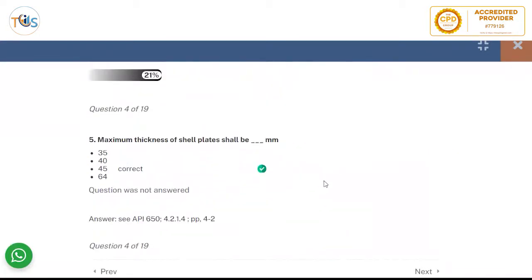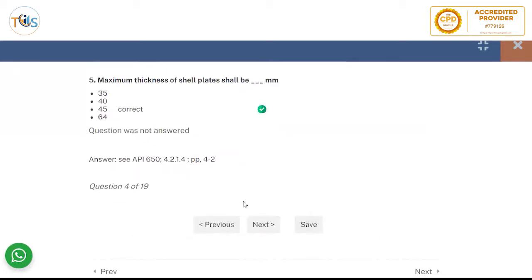Maximum thickness of shell plates shall be 45 millimeter. So this is in construction code. We put the reference here.